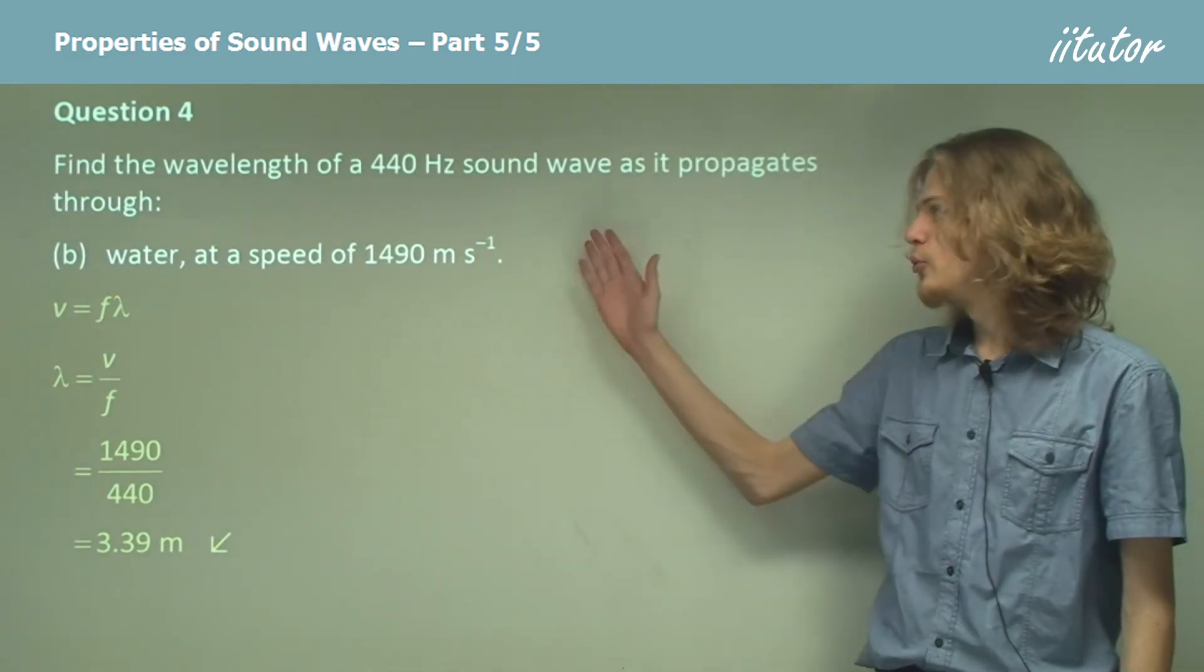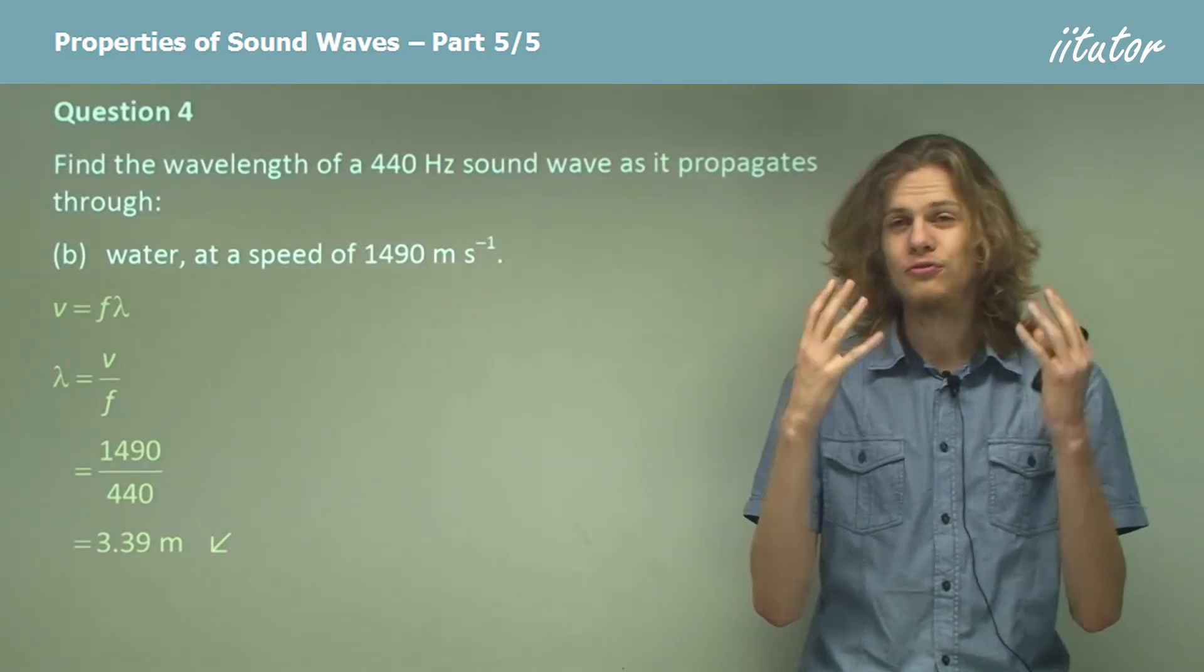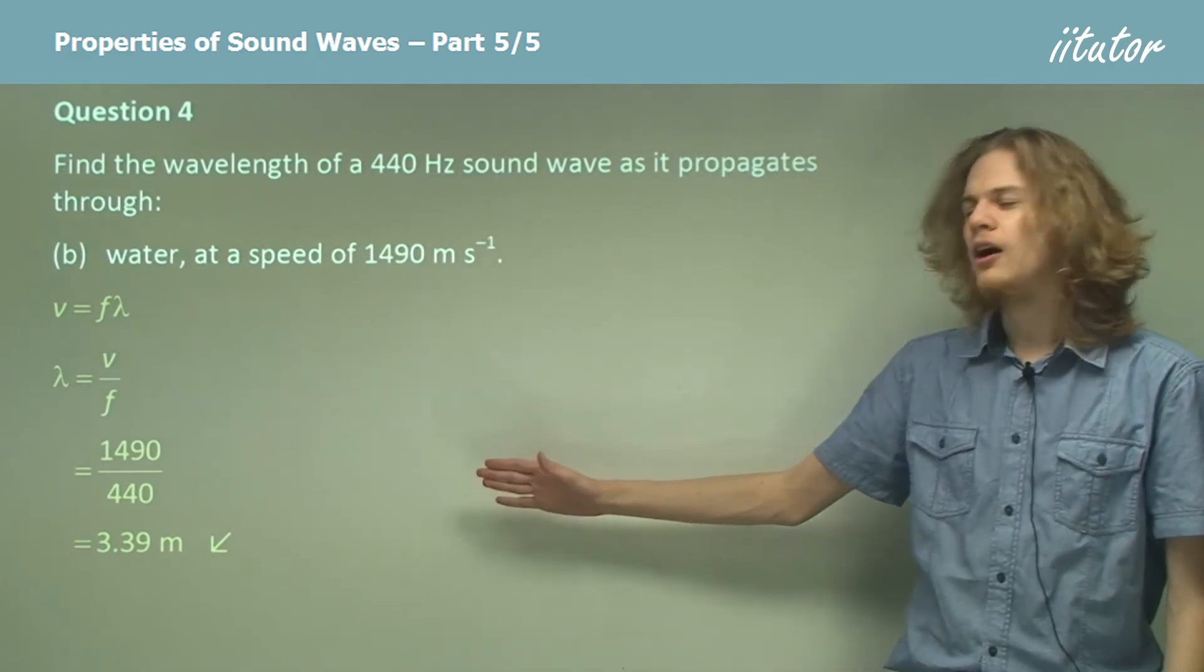This means that if we have two waves of the same frequency, but one is moving very fast and one is moving very slow, then the fast one will have a longer wavelength.